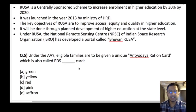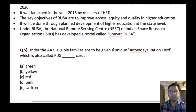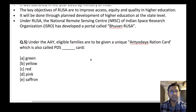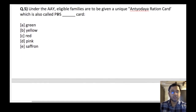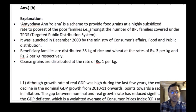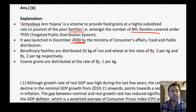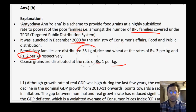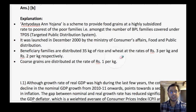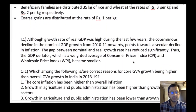Under AAY — Antyodaya Anna Yojana — eligible families are given a unique Antyodaya Ration Card, also called PDS dash card. The answer is B — yellow. It is also called PDS yellow card. AAY is a scheme to provide food grains at highly subsidized rates to the poorest of poor families. It is still ongoing even after the National Food Security Act was passed. Launched in 2000 by Ministry of Consumer Affairs. Beneficiary families are given 35 kg of rice and wheat at ₹3 per kg for rice and ₹2 per kg for wheat; coarse grains are also distributed at ₹1 per kg.